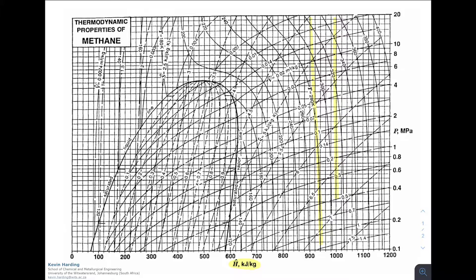Here is a diagram for methane, again with enthalpy on the x-axis as horizontal lines and pressure on the y-axis. The saturation bubble is slightly slanted, with the left side being the liquid saturation line and the right being the vapor saturation line. Inside, we have quality fractions of 0.3, 0.5, 0.6, and 0.9, entropy in red with values in kilojoules per kilogram, temperature lines following an S-curve, and specific volume lines.